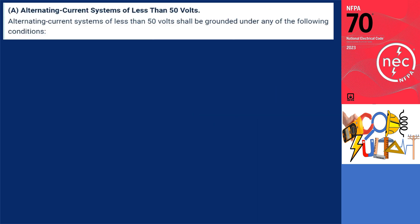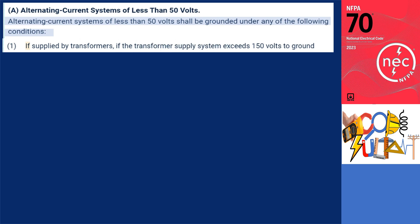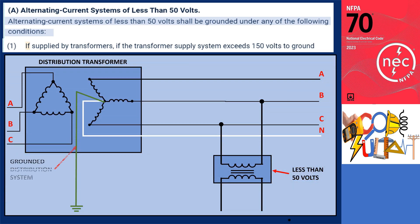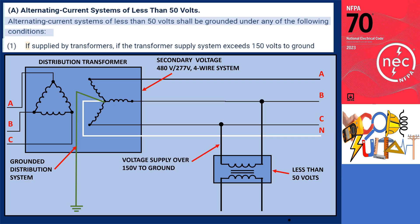What are the alternating current systems that shall be grounded? Section 250.20A requires alternating current systems of less than 50 volts shall be grounded under any of the following conditions. Condition 1: if supplied by transformers, if the transformer supply system exceeds 150 volts to ground. To illustrate this, let's consider a grounded distribution system with a secondary voltage of 480 volts for three-phase and 277 volts for single phase. As the supply voltage exceeds 150 volts to ground, one of the transformer's secondary conductors must be connected to the ground.